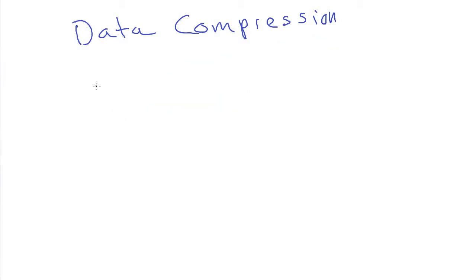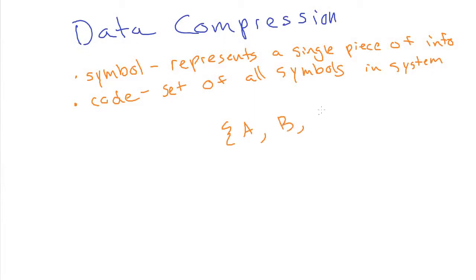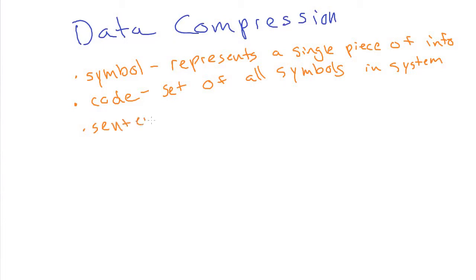Before we can talk about Huffman coding, we have a little bit more terminology. The first piece of terminology is a symbol, which is a single indivisible thing that represents a piece of information. Next we have a code, which is the set of all possible symbols that you could see. So if we have a code consisting of the symbols A, B, C, and D, then there are four symbols — A, B, C, and D are all symbols, and this whole set is the code.